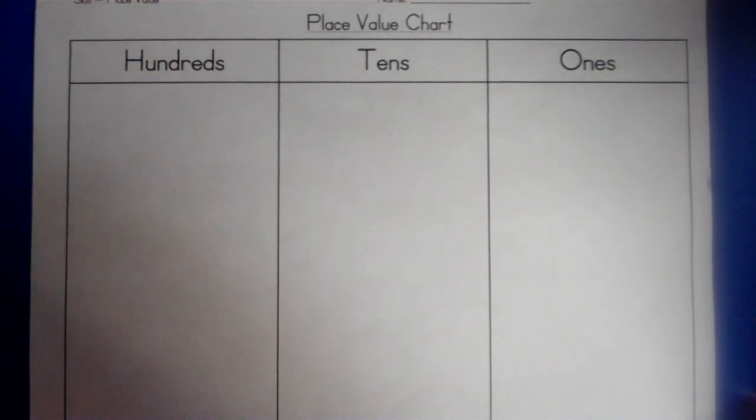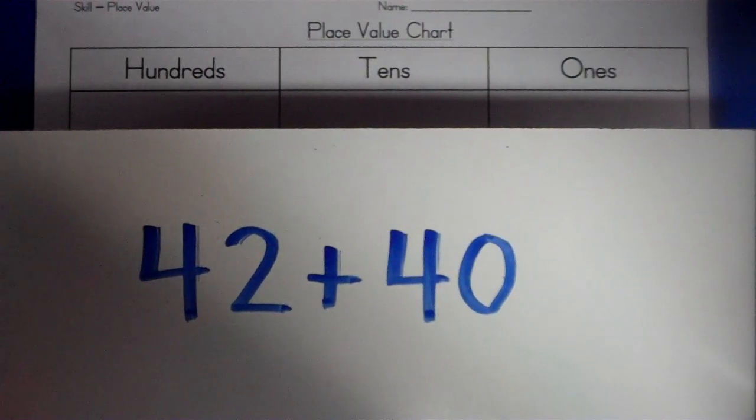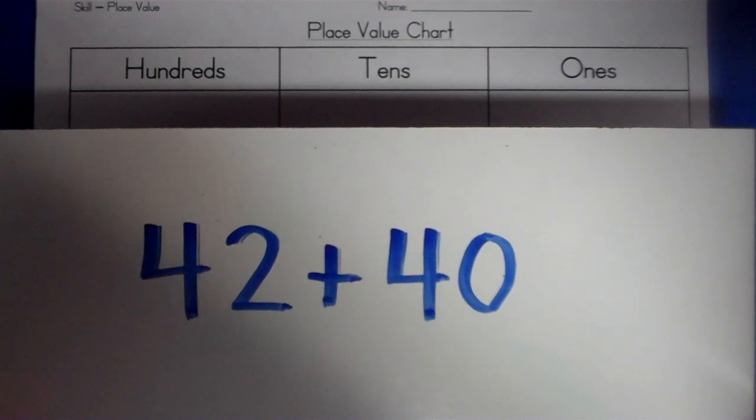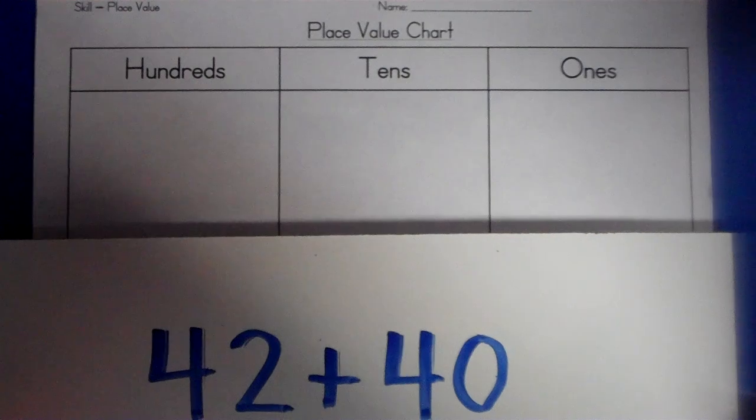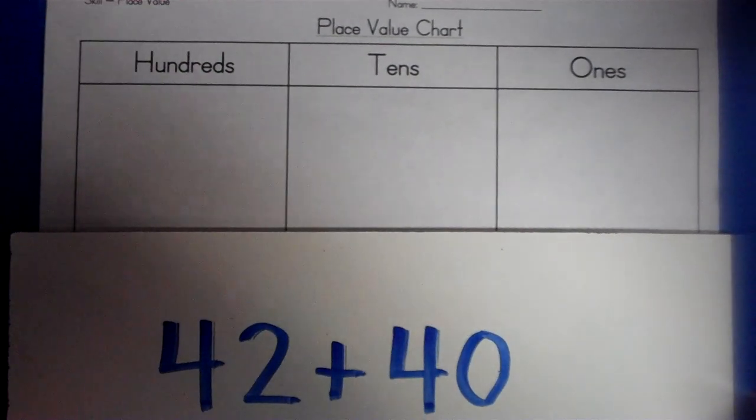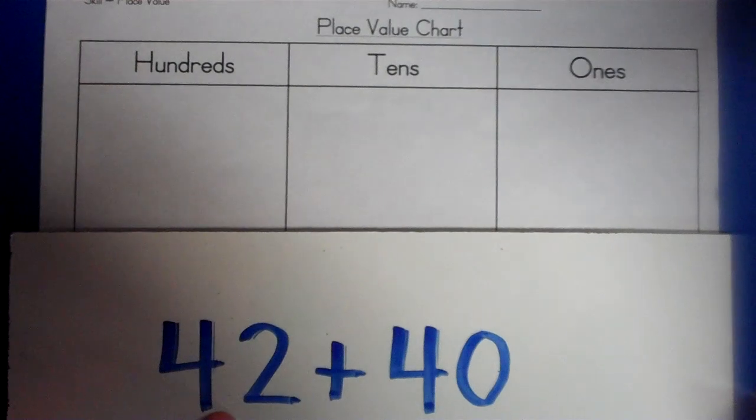Let's take a look at our first problem using these manipulatives. We have 42 plus 40. This tells us that we have 4 tens and 2 ones because this is the ones place and this is the tens place.